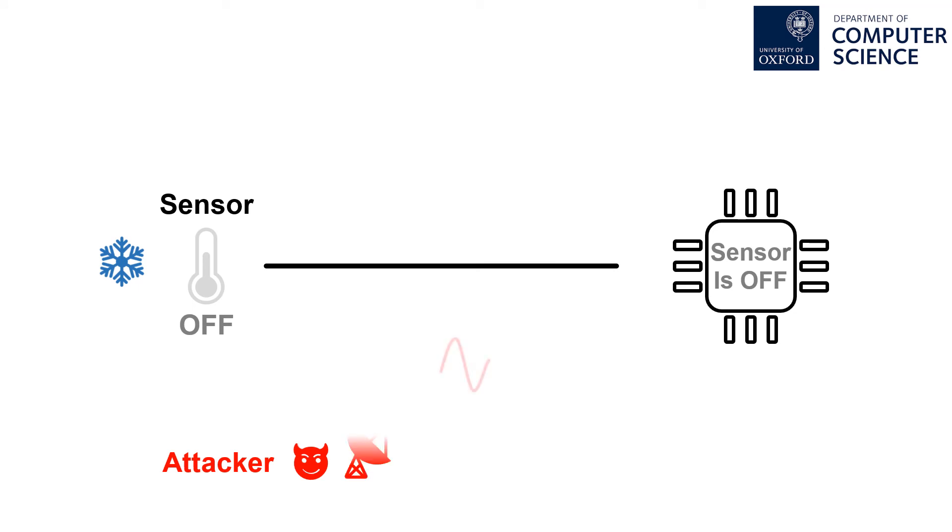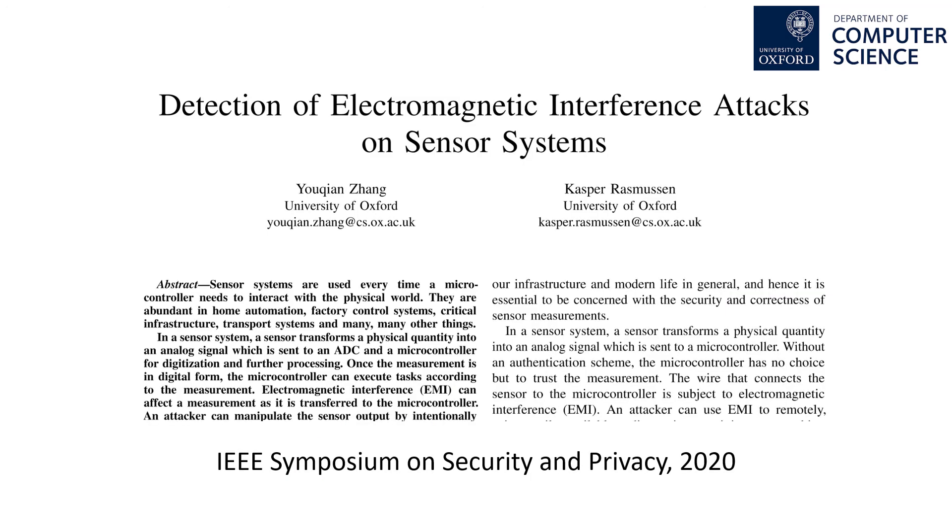If the microcontroller detects unexpected fluctuations in the sensor output, the attacking signal is detected. See the details in our paper Detection of Electromagnetic Interference Attacks on Sensor Systems at SMP 2020.